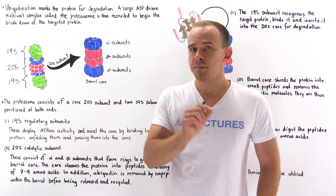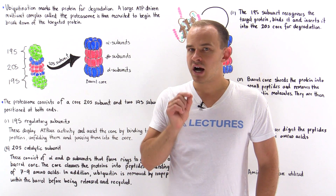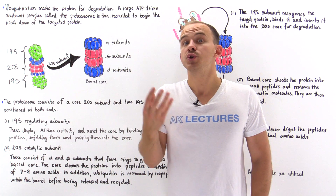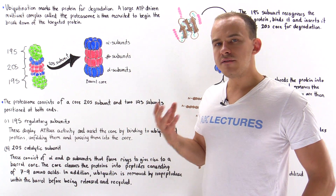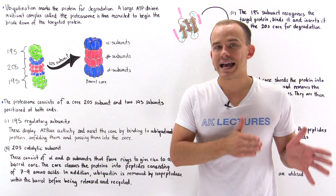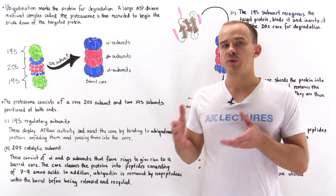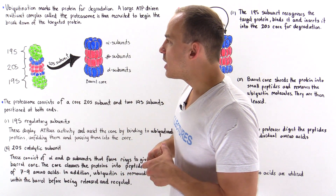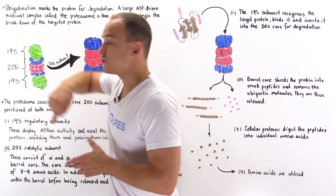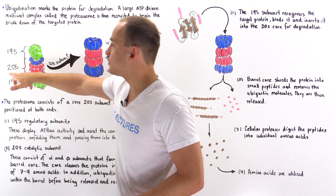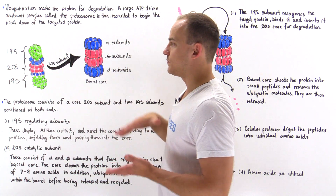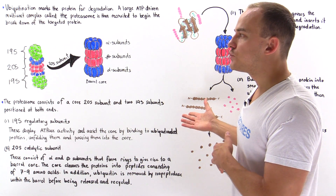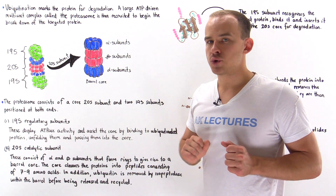The proteasome is an ATP-driven multi-subunit complex that consists of two units. One of these units we call the 20S unit and the other unit we call the 19S unit. As we see in this particular diagram, we have two 19S units that flank the 20S subunit on both sides. The 19S units are actually regulatory units.